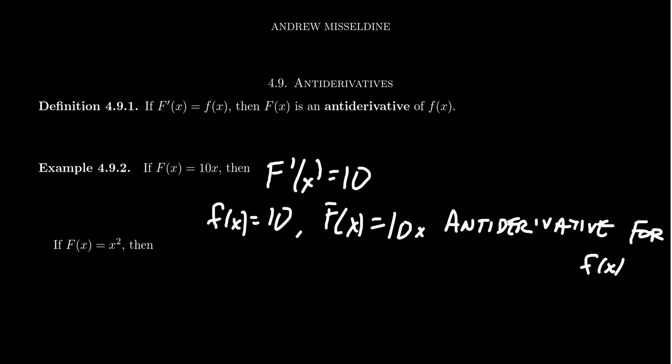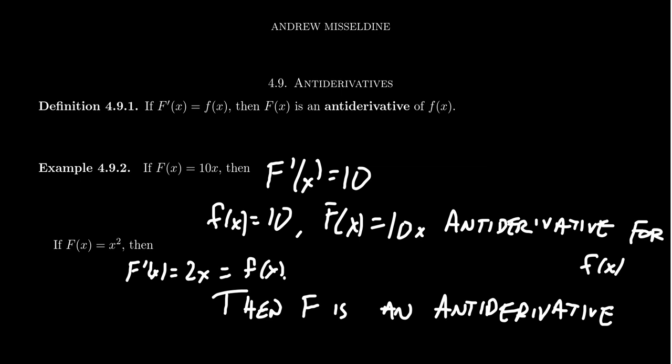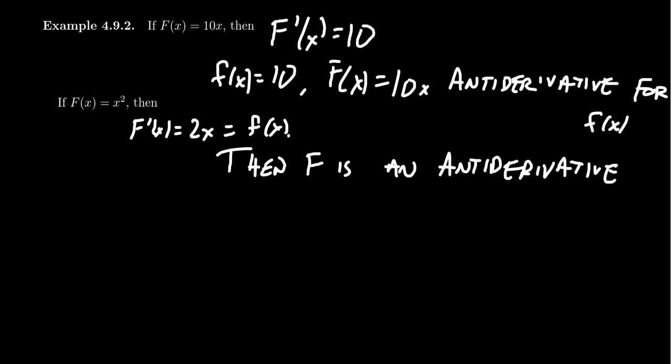As another example, if you take capital F of x this time to be x squared, then its derivative would be 2x, which we'll call that little f of x. All right, little f of x, and so we have the relationship here that if little f of x equals 2x, then again, capital F is an anti-derivative of little f. Give me some more room here on the screen. So this is an anti-derivative because its derivative is little f.